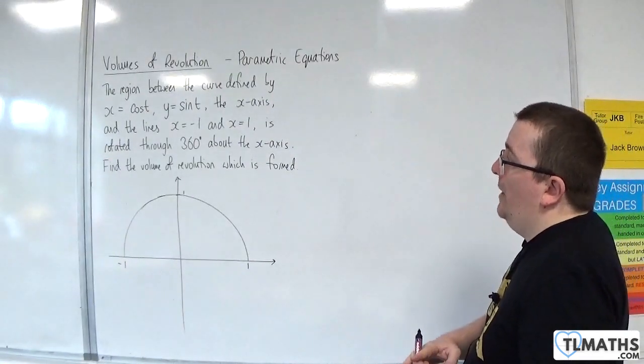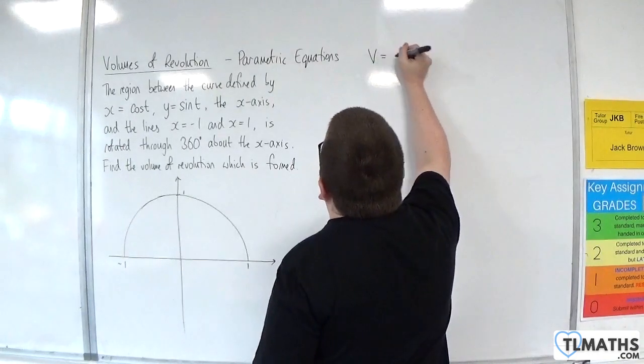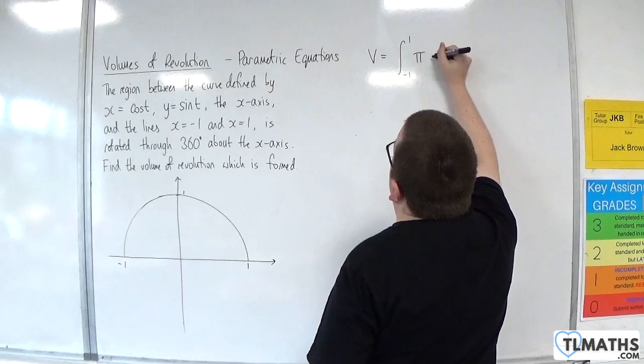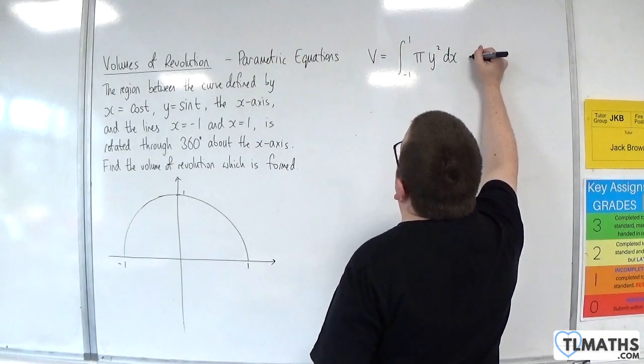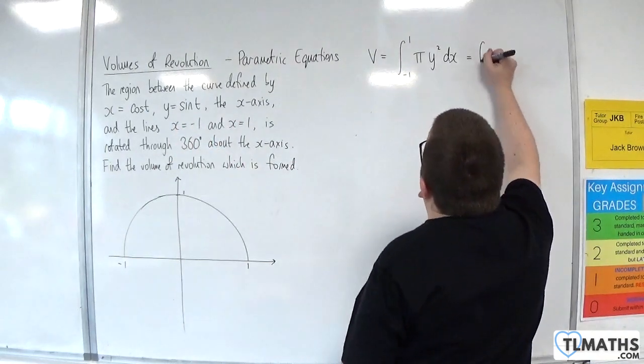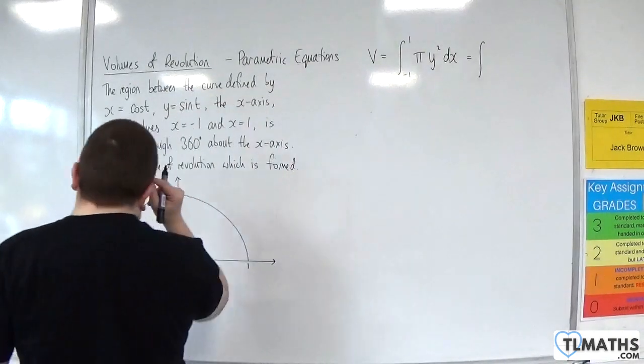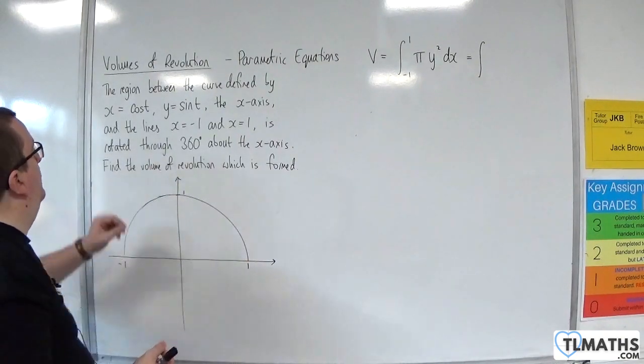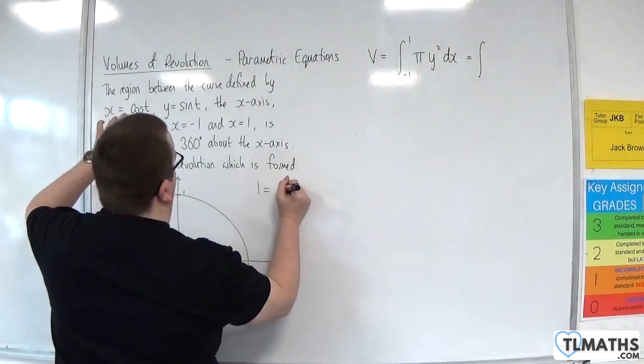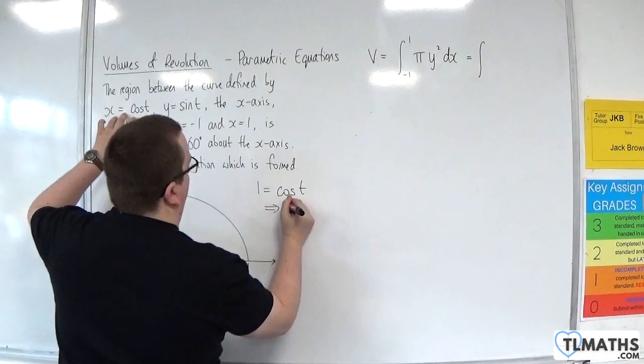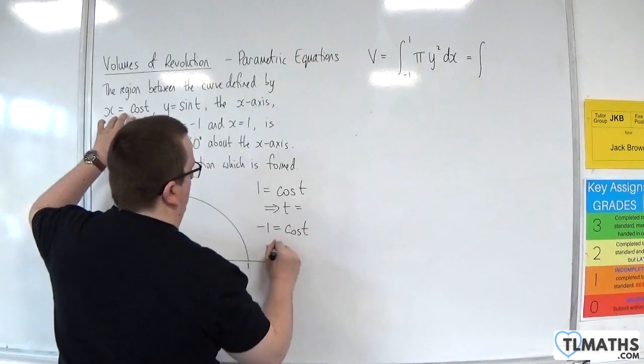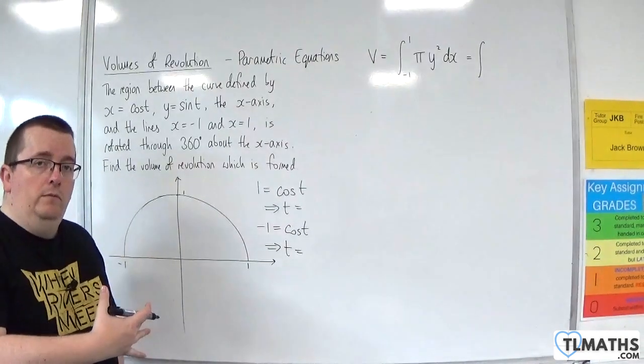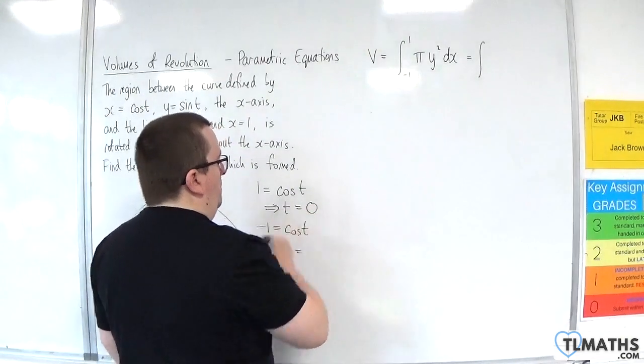So because we are rotating about the x-axis, the volume will be the integral between x equals minus 1 and 1 of pi times y squared dx. But because the curve is defined parametrically, we're going to have to think a little bit more about this. So because we're looking at x equals minus 1 to 1, we need to think of the corresponding t values that go with that. So we're going to need to put 1 equal to cosine of t and solve that. Now, cosine of t is equal to 1, then t will be equal to 0.